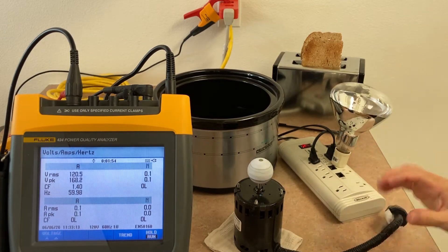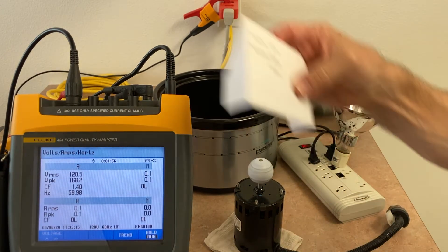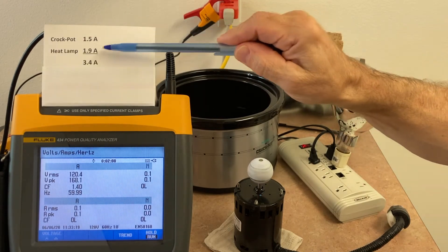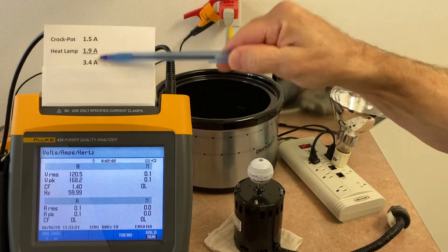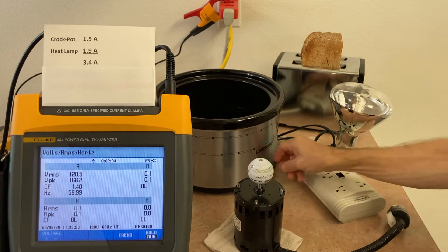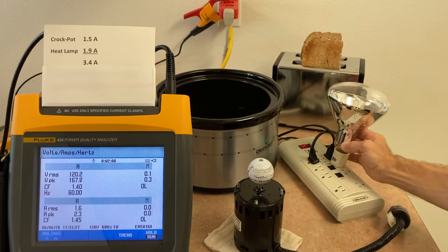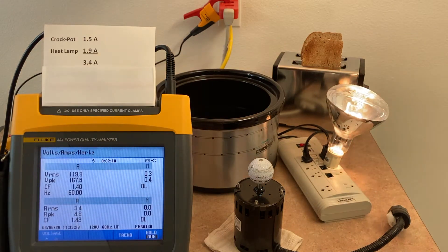So I'm going to put a couple things together. We're going to just start off with a couple here, put the crock pot and the heat lamp together. 1.5 and 1.9, we should get 3.4. That fits the rules that you've studied so far. Crock pot, lamp, 3.4 amps. Perfect.